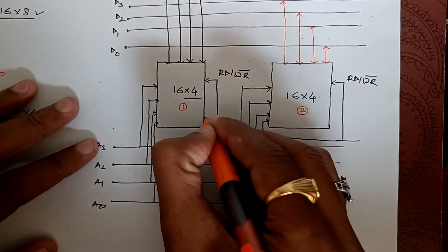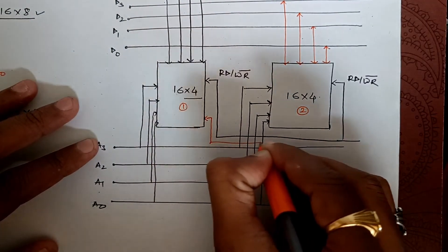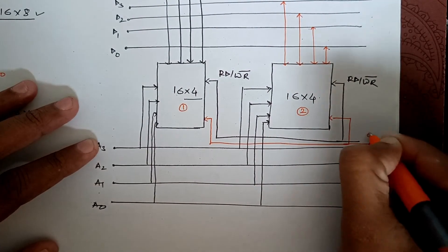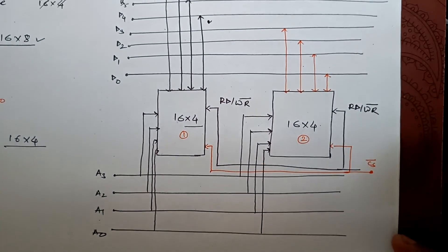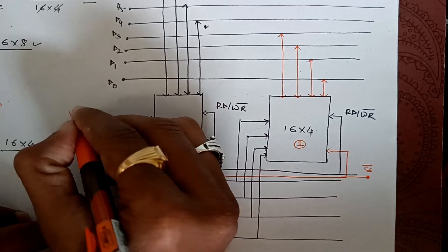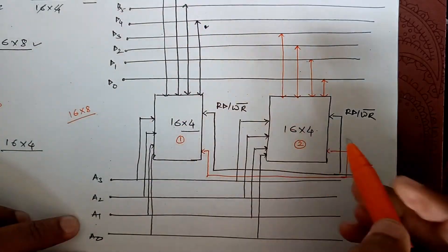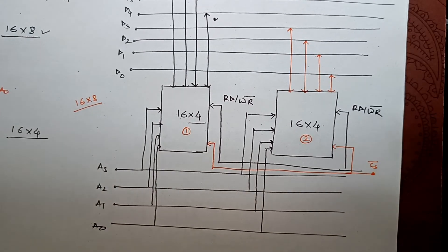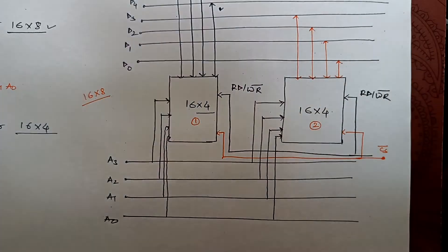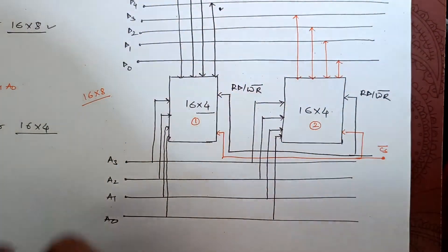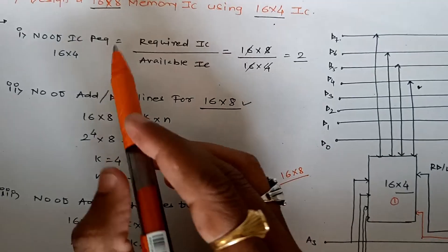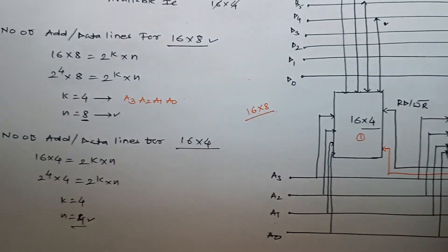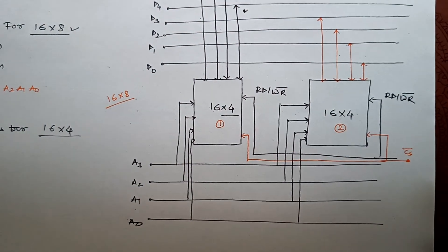So this is our schematic of 16 by 8 IC using 16 by 4 IC. Such kind of questions you can expect in university examinations. I hope you understood this. First step: we determined the number of ICs required using this formula. Second: how many address lines and data lines. And finally we have come across this schematic. Thank you.